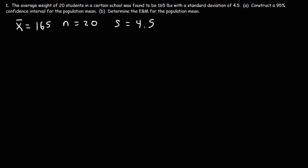When you have a question like this on a test, you need to determine if you should use a normal distribution or a student's t distribution. When you know the population standard deviation, you typically use the normal distribution. But we have the sample standard deviation, and that's one indication that we need to use the student's t distribution to construct the confidence interval.